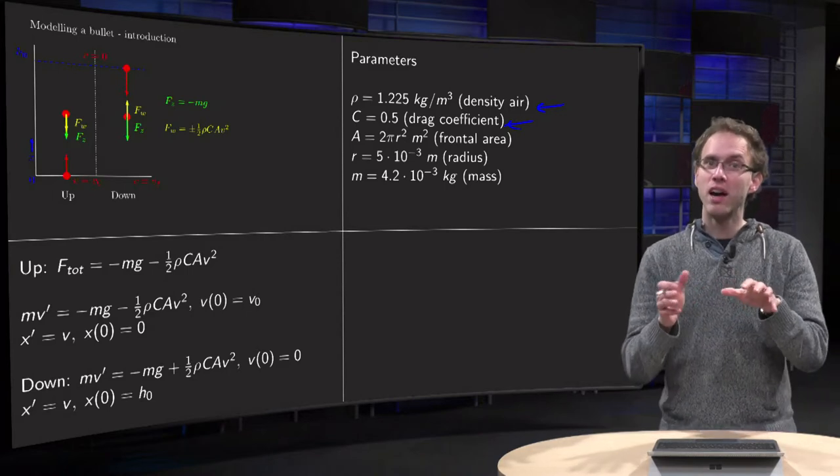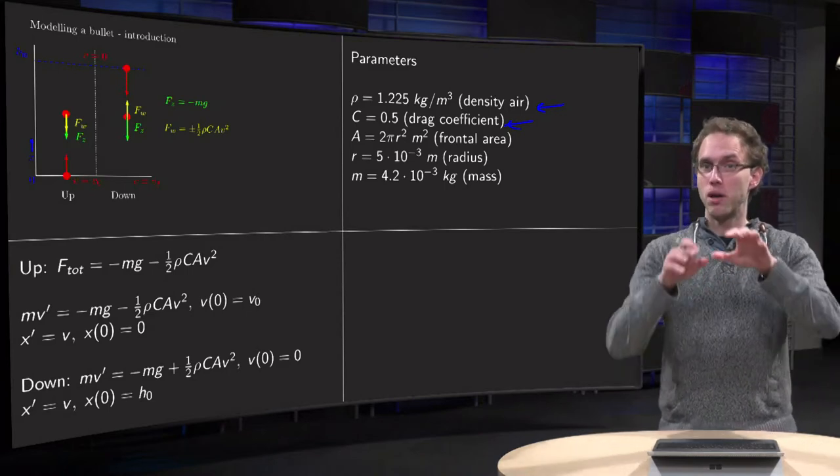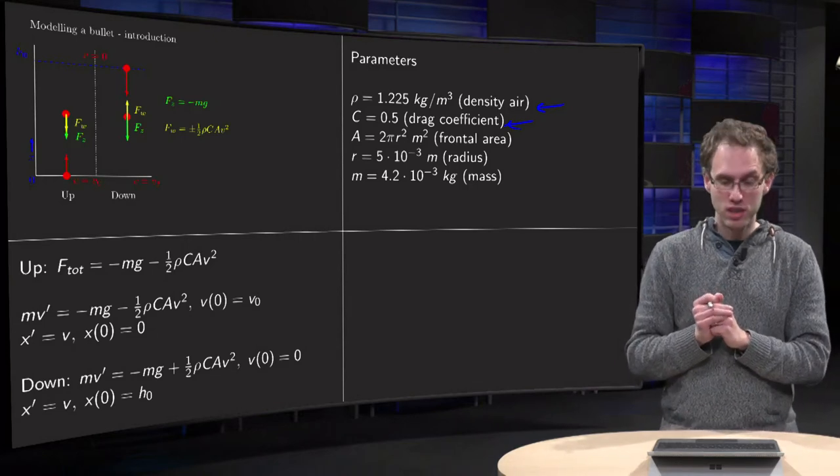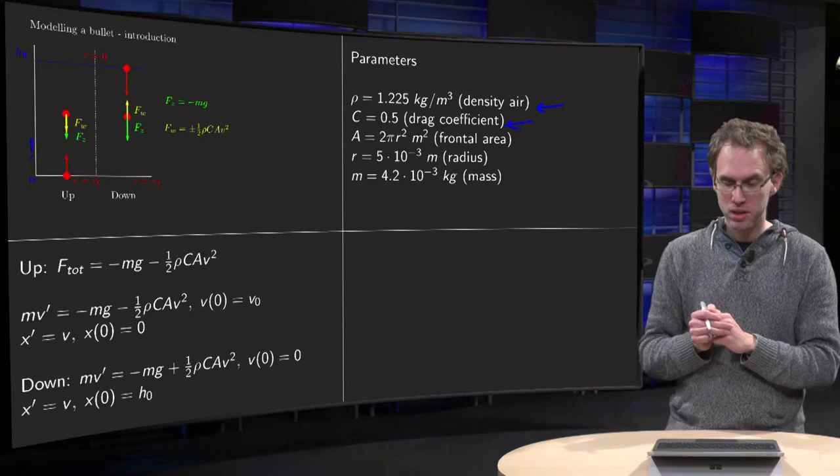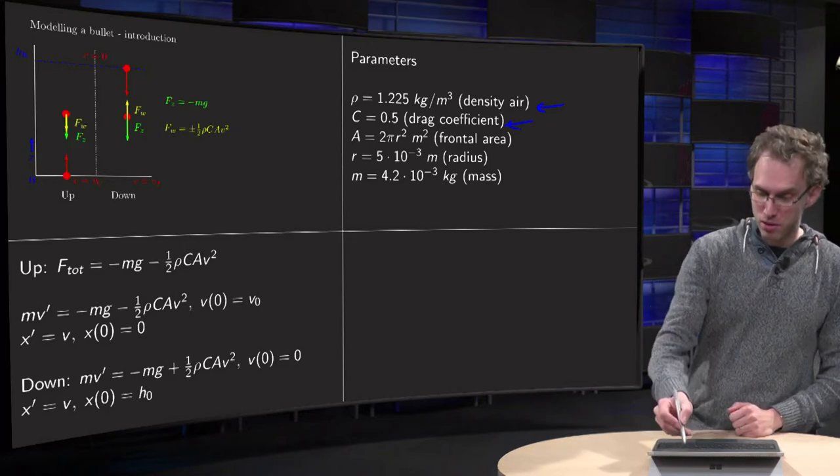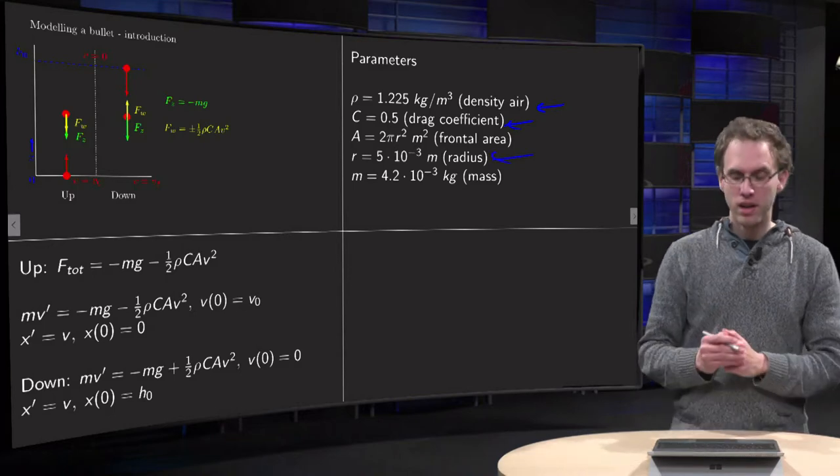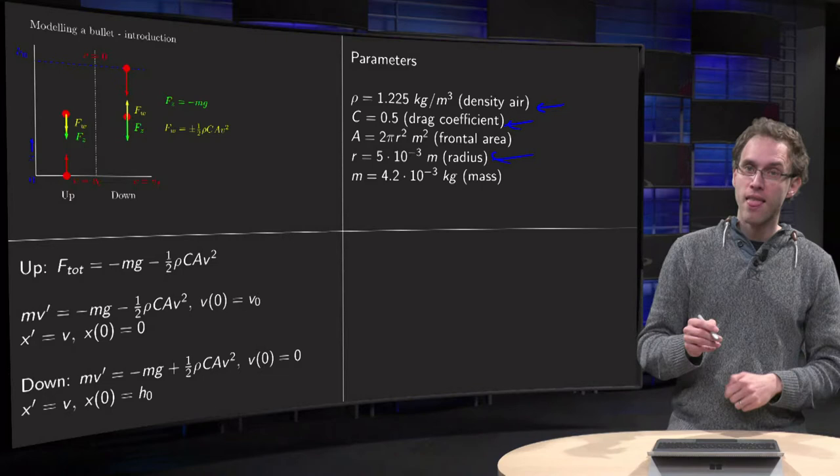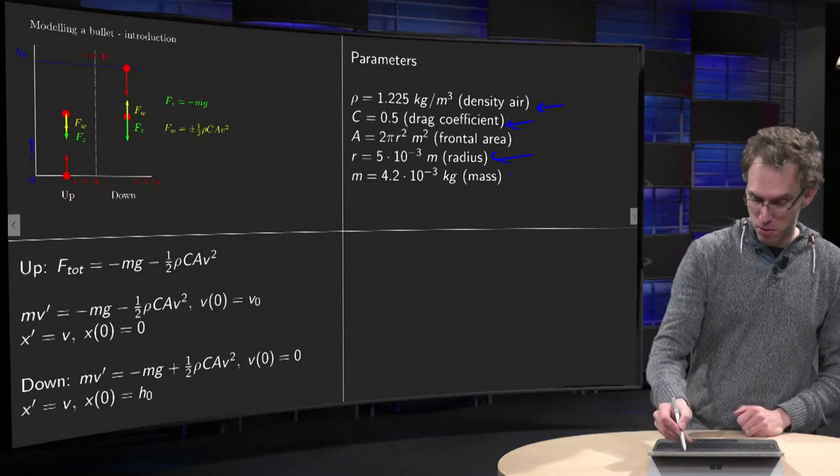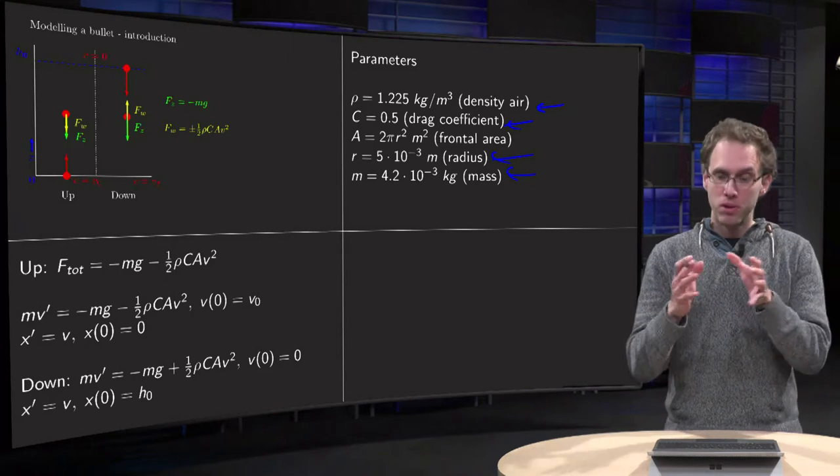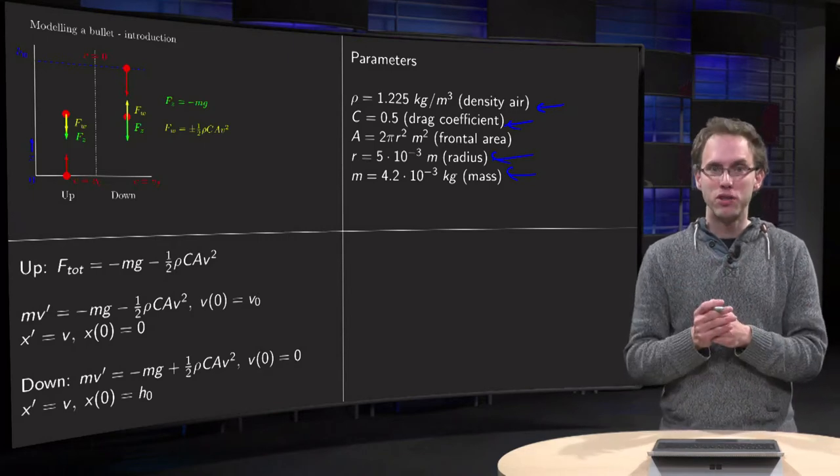A is the frontal area of the bullet. Let us approximate it by just a square. So 2 pi r squared. And the radius of a typical bullet, you can also look it up easily. It is 5 millimeters. So that gives you the A. And the mass of a typical bullet is a few grams. So those are typical parameters for a bullet.